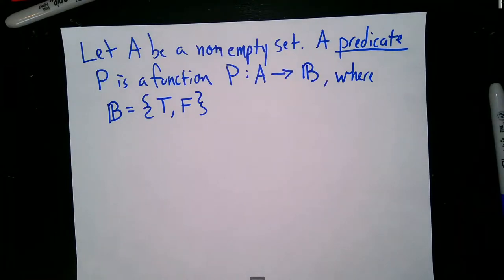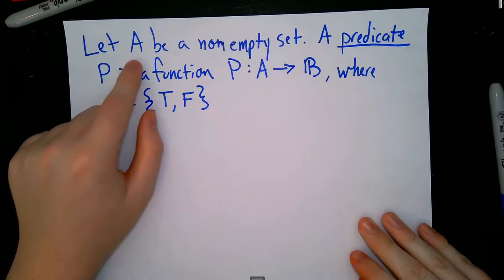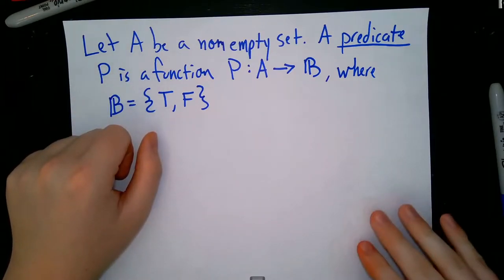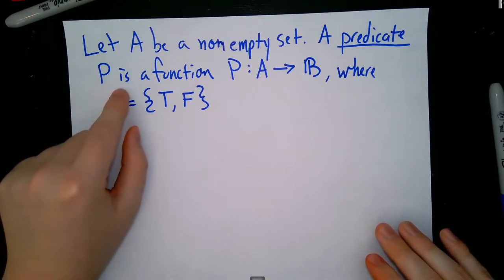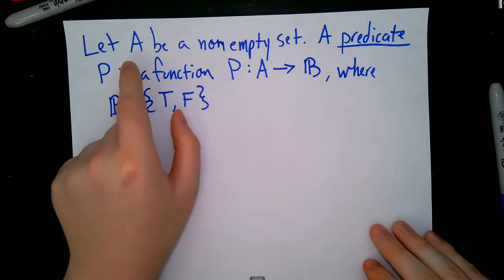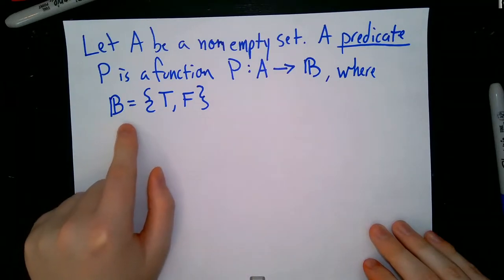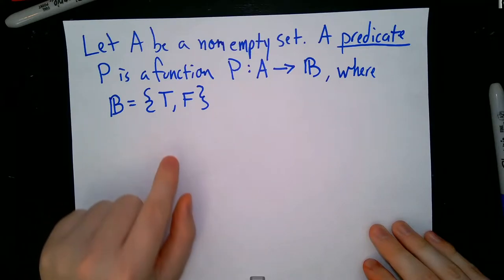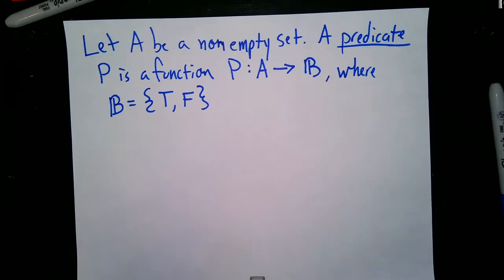Hi everyone, welcome back to 348. In this video we're going to talk about a very special type of function called a predicate. We're going to let A be a non-empty set, and we'll say that a predicate p is a function that takes inputs from this non-empty set A and sends it out to the boolean space, where the boolean space is just the set containing true or false. So really, a predicate is something that takes in some input and gives us a statement that is either true or false.